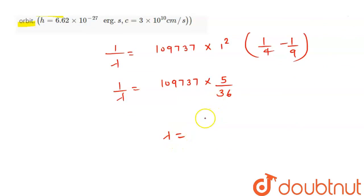So for lambda calculation, first we multiply this. Multiply what? 109737. 109737 multiply by 5, कितना आजाएगा? 548685 upon 36. Then divide by 36, so this value comes to 15.